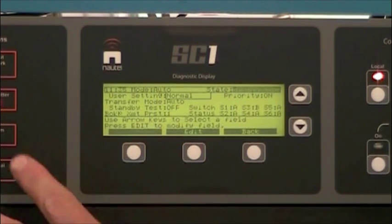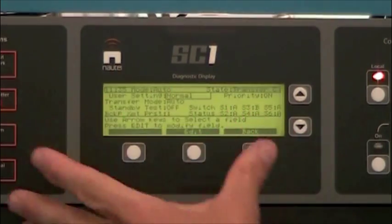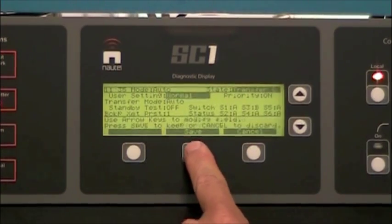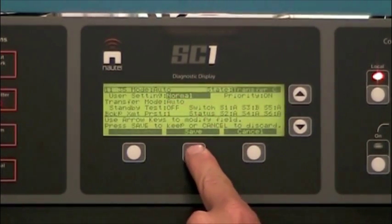So very simply from the menu screen we look at the transfer menu which is here. I've highlighted normal. I hit edit. We want normal so we hit save.